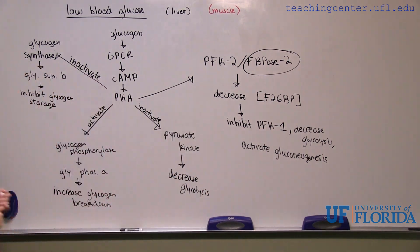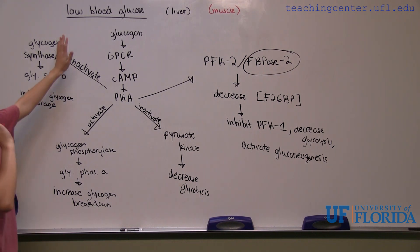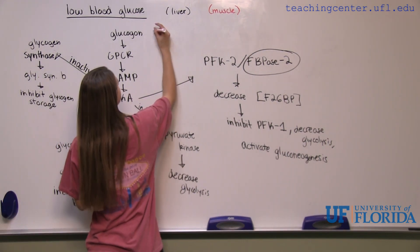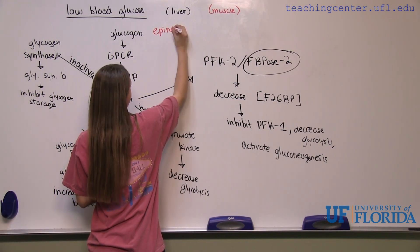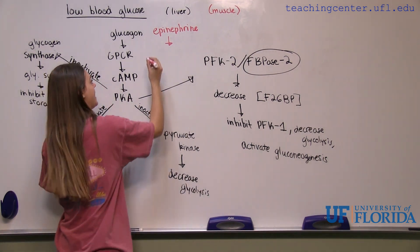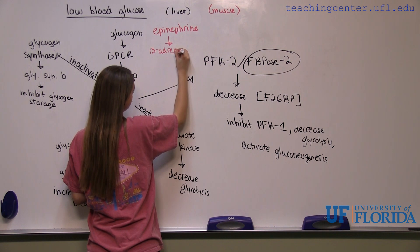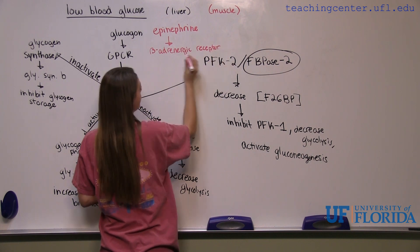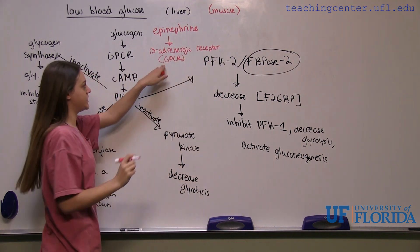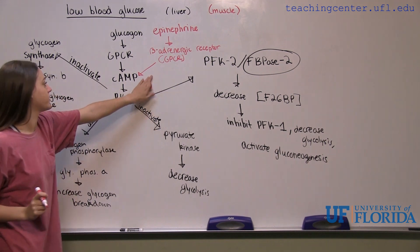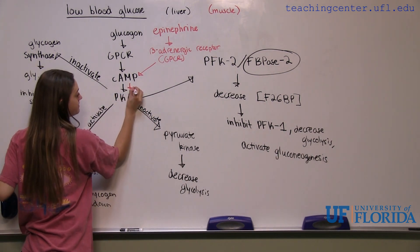That is everything for the liver cells. Now we are going to go on to muscles — there are only a few key differences. Muscle cells do not have a glucagon receptor, so instead we are going to use the hormone epinephrine. Epinephrine is going to bind to a beta-adrenergic receptor, which is also a GPCR, a G protein coupled receptor. From there we are going to have the same route: we activate cAMP, which is going to activate PKA.